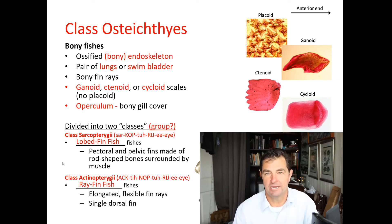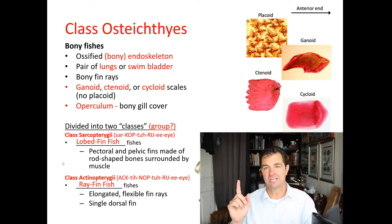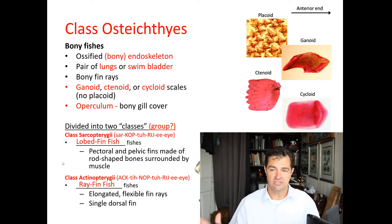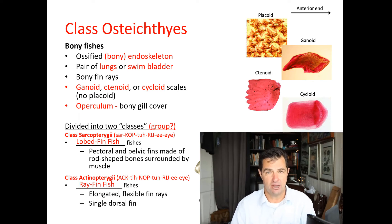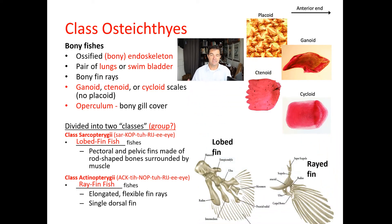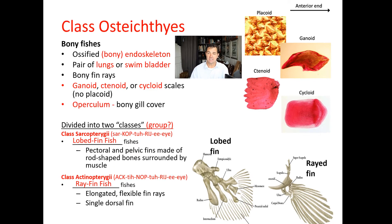Welcome back. Today we're going to talk about bony fish, class Osteichthyes. Bony fish can be recognized by their bony endoskeleton. Some of them actually have a pair of lungs, or more commonly, a swim bladder. They also have fins with bony projections inside them.